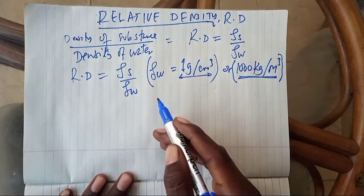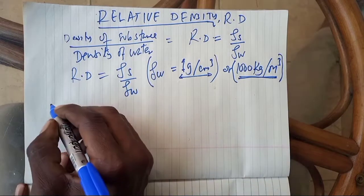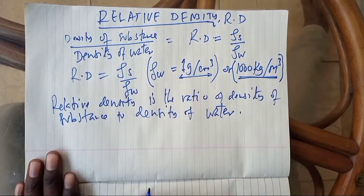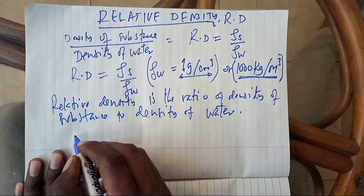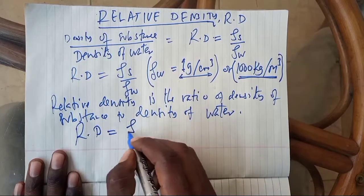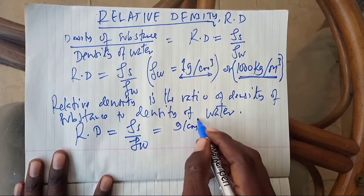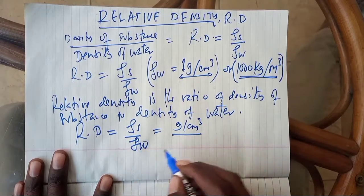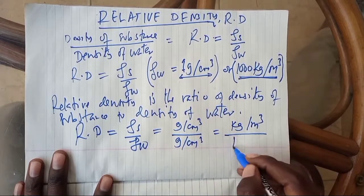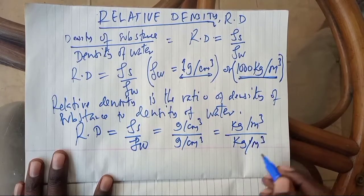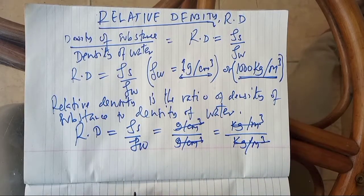By taking the ratio of density of the substance to density of water, that is what we term as relative density. By definition, relative density is the ratio of the density of the substance to the density of water. Mathematically, it is written as: relative density = density of substance over density of water. The units cancel out — gram per centimeter cubic over gram per centimeter cubic, or kilogram per meter cubic over kilogram per meter cubic — and that is why relative density has no unit.